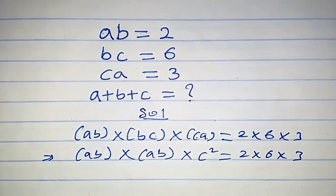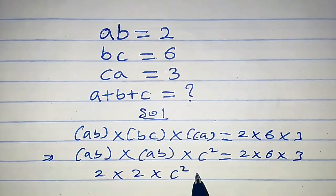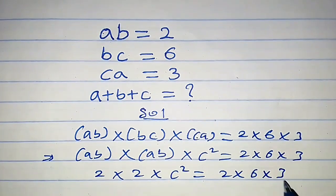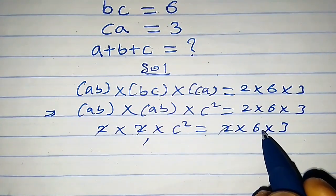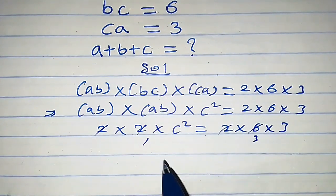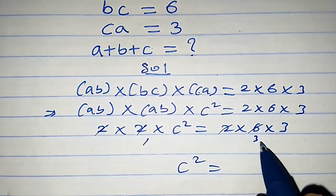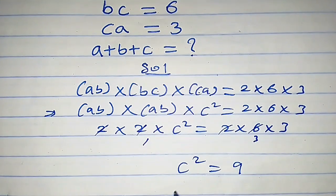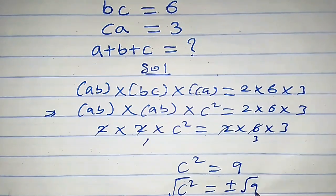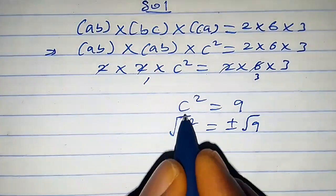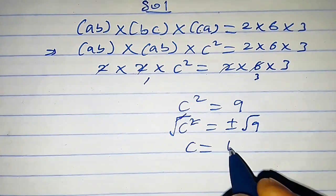Since ab equals 2, we plug it in: 2 times 2 times c² equals 2 times 6 times 3. After cancellation, c² equals 9. Taking the square root of both sides gives c equals plus or minus 3.